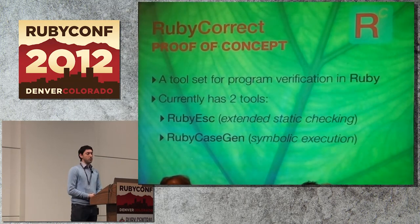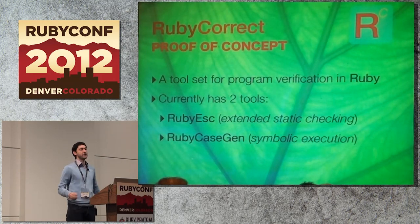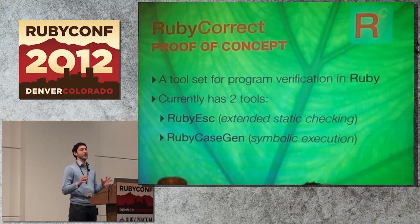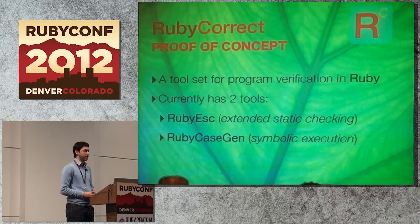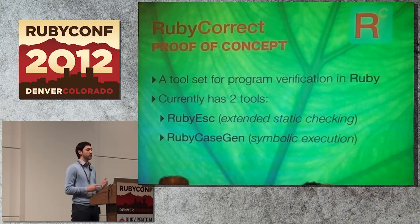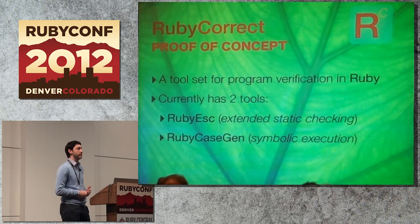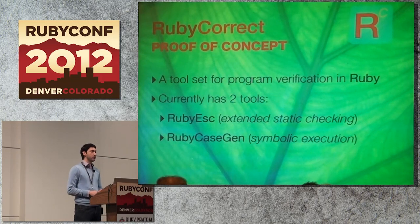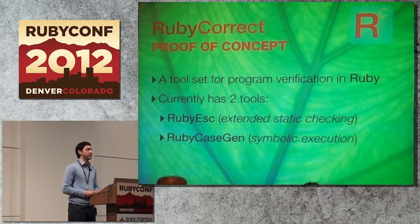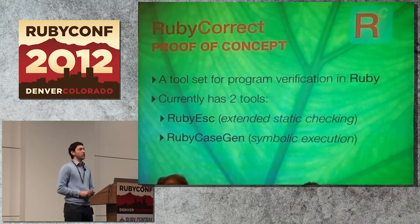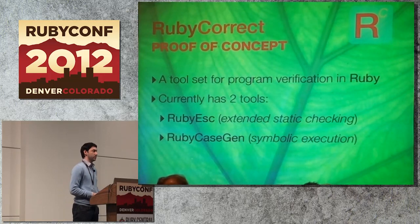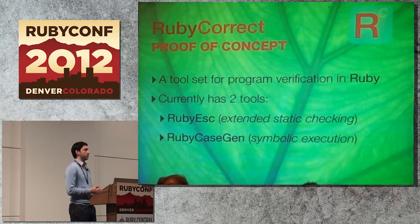I developed a tool called Ruby Correct, and I should preface this entire talk with the fact that this is a real proof of concept — it's not really production ready. The toolset has two tools inside of it for program verification in Ruby. The first tool is called Ruby ESC, which does extended static checking. The second one is called Ruby Case Gen, which does symbolic execution.